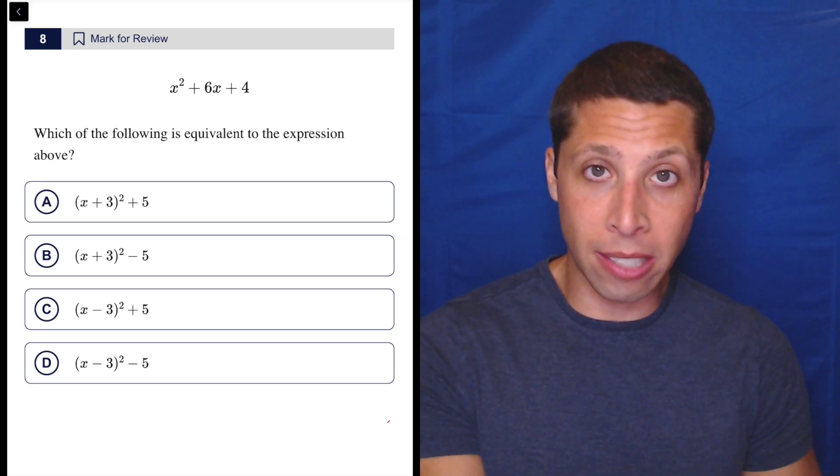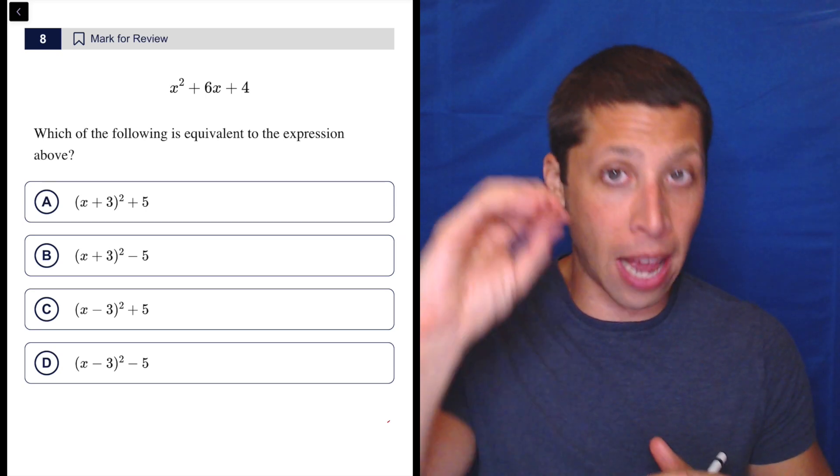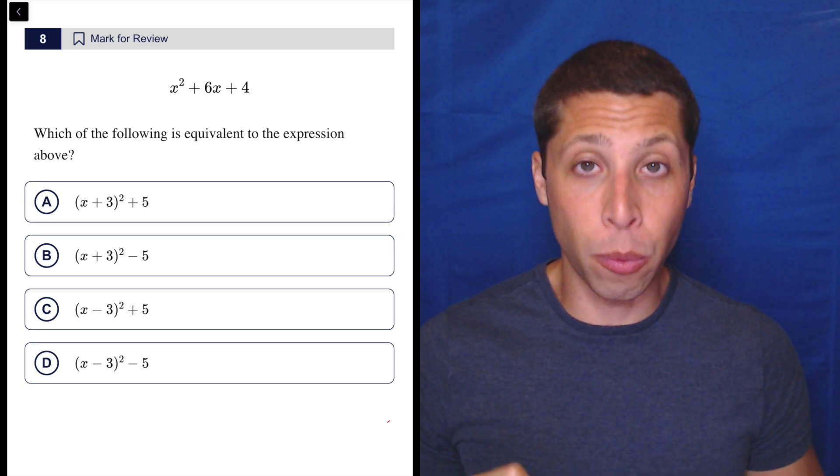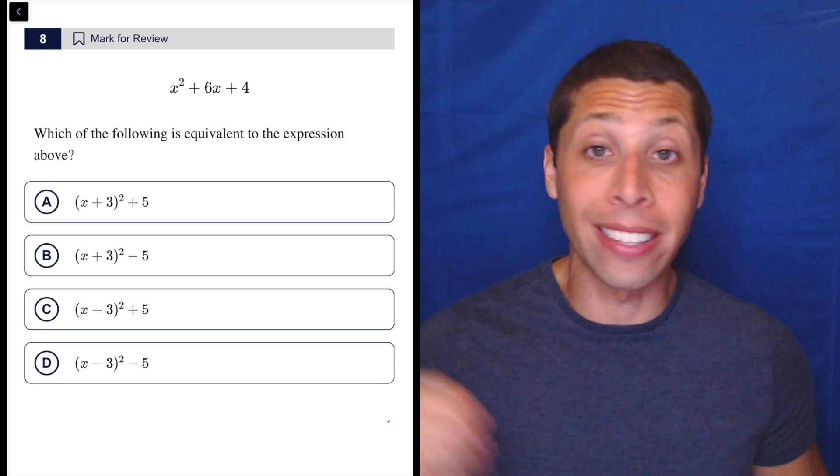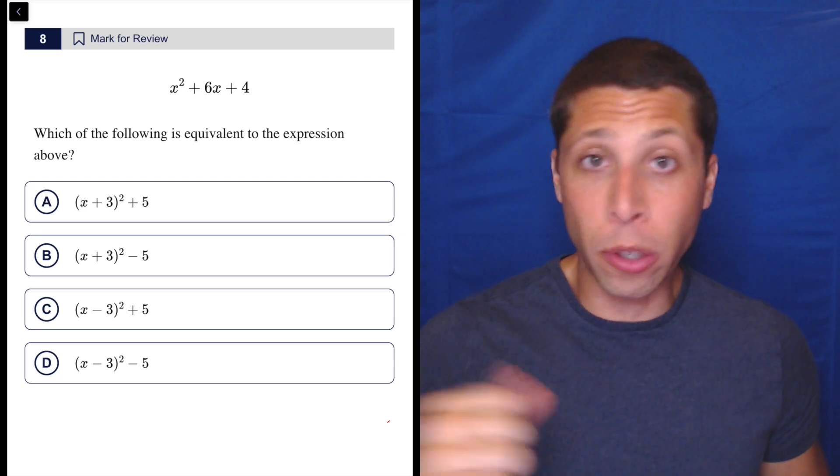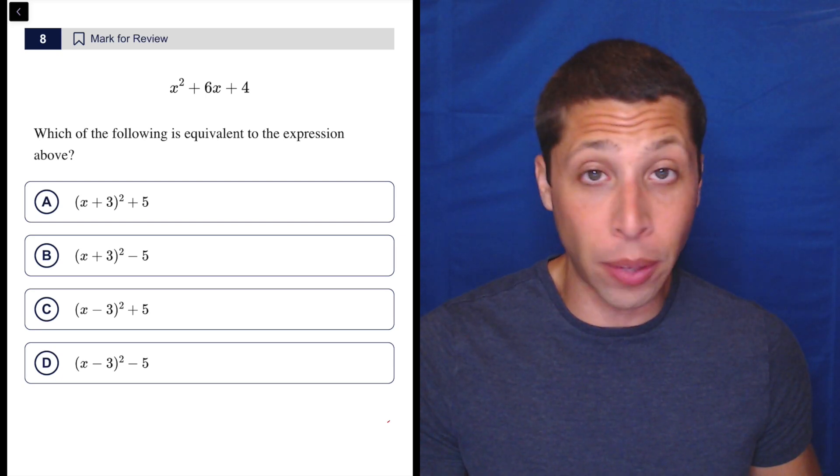So yes, we could go to Desmos and we could graph this top equation and then graph all the other ones and see how they compare. They need to line up exactly, but I just want to show you the arithmetize because I don't think it's that bad.